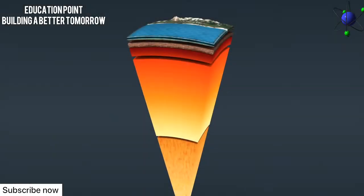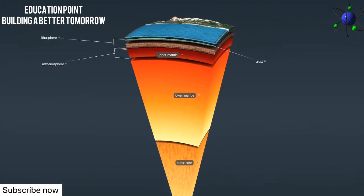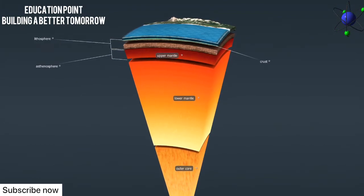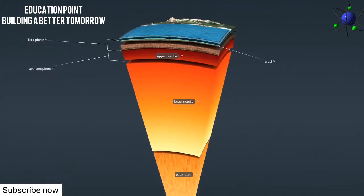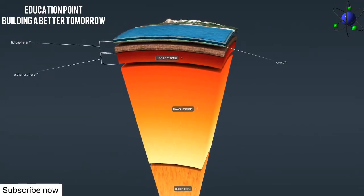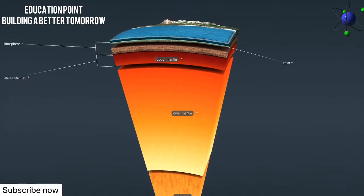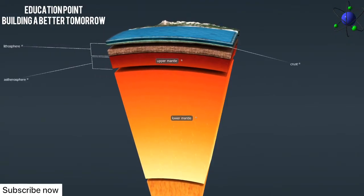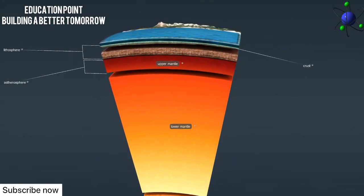The solid outermost shell of the Earth is called the lithosphere. This includes the crust and the upper solid part of the mantle.